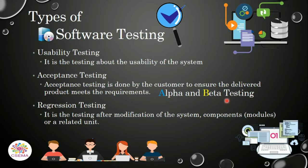Acceptance testing is categorized into two categories: alpha testing and beta testing. Alpha testing is performed by the development team, and beta testing is performed by the customers. These customers provide feedback about the software product to the development team, and based on that feedback the development team makes changes and improvements to the system.